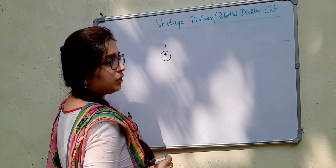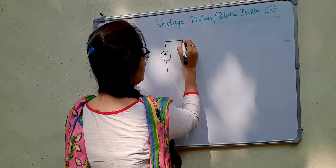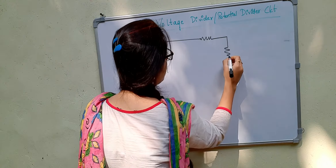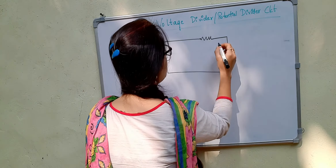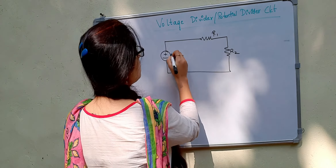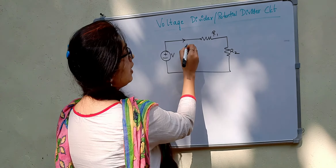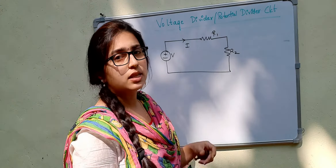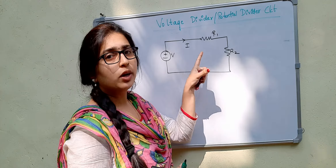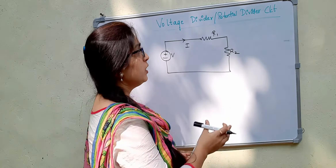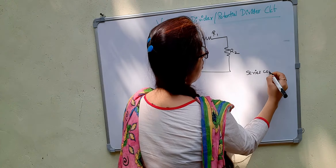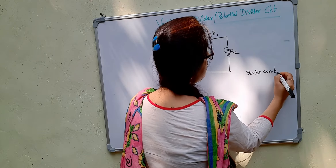This is the voltage source, and it is applied across the resistors that are connected in series. These two are the resistors R1 and R2, and this is the voltage source V. The current flowing through this circuit, let that be I. This is a series combination because there is only one path for the current to flow.